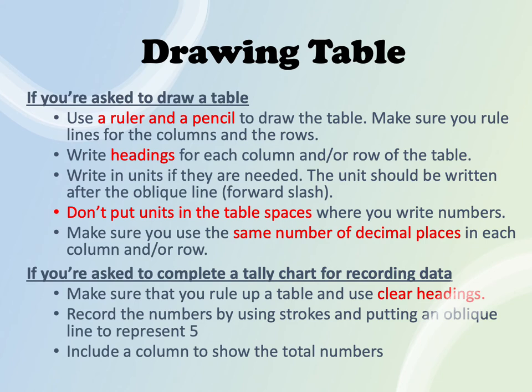If asked to complete a tally chart, use a ruler to draw the table and give clear headings. Record numbers using strokes and give an oblique line to represent 5. Include another column to show the total number of strokes. For table drawing questions, usually 3 to 4 marks are given: 1 mark for drawing with pencil and ruler, 1 mark for correct headings with units, and 1 to 2 marks for writing numbers clearly and correctly in the table.